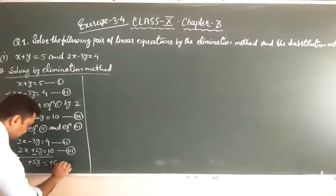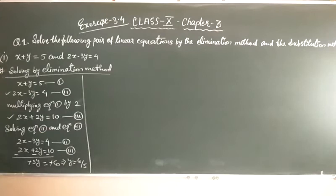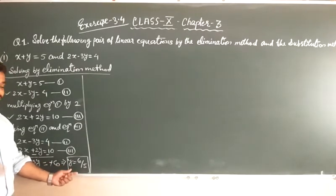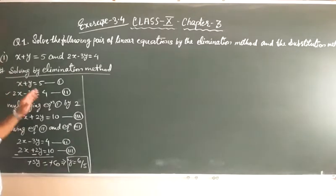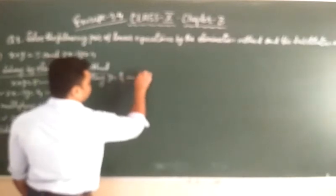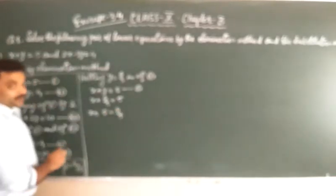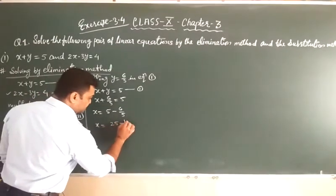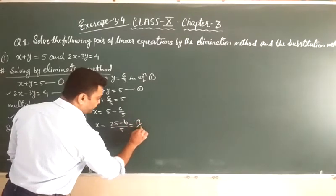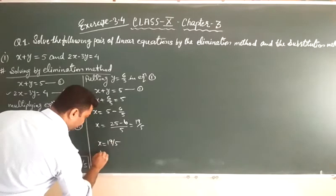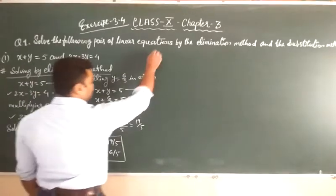From both sides we cancel the minus sign, and this gives y is equal to 6 upon 5. Now our task is to find the value of x — we will put this value of y in equation number 1. Putting y equal to 6 upon 5 in equation 1: x plus y is equal to 5, so x plus 6 upon 5 is equal to 5, therefore x is equal to 5 minus 6 upon 5. Taking LCM: 25 minus 6 upon 5, that is 19 upon 5. So our answer is x is equal to 19 upon 5 and y is equal to 6 upon 5.